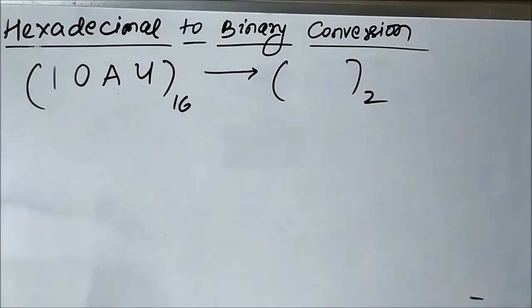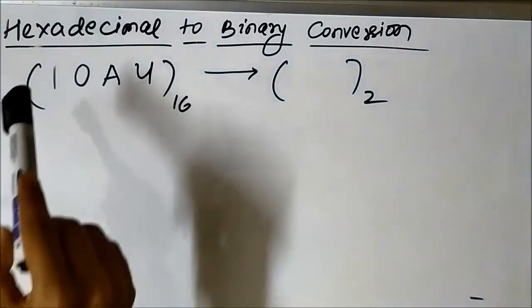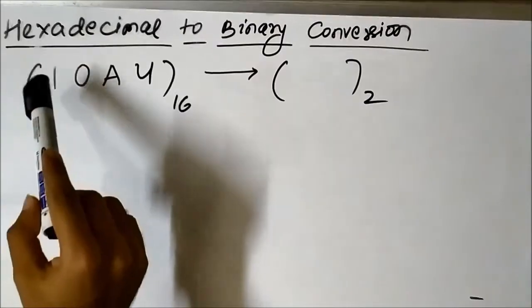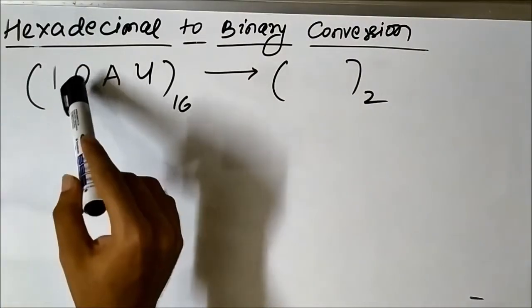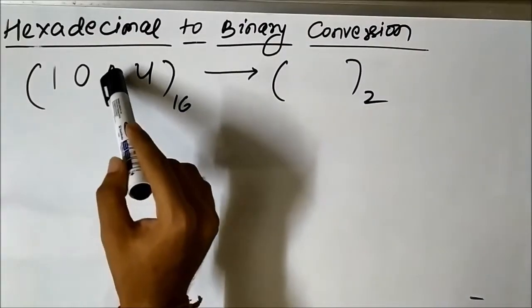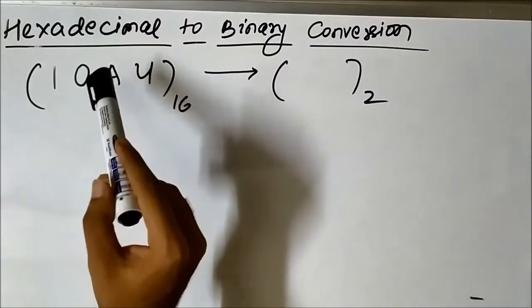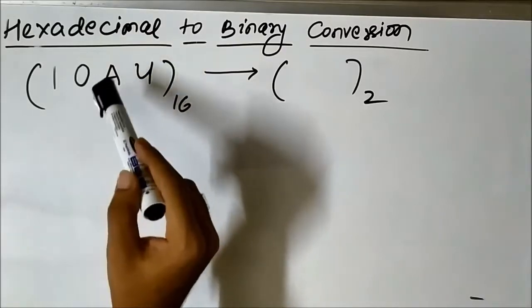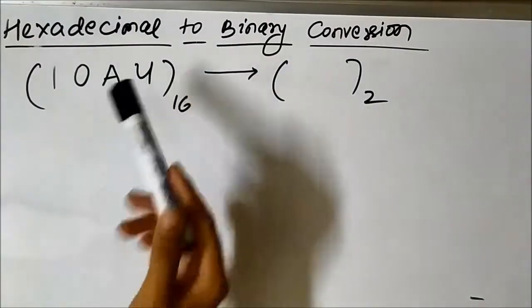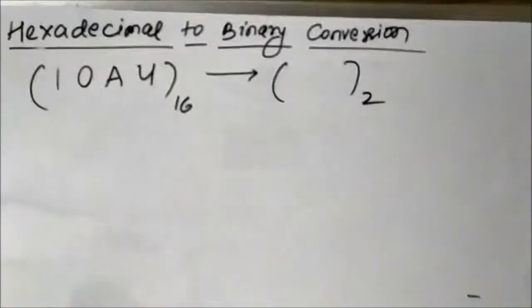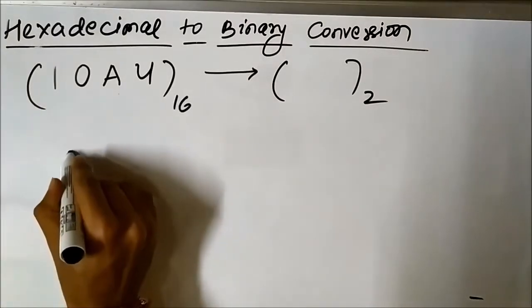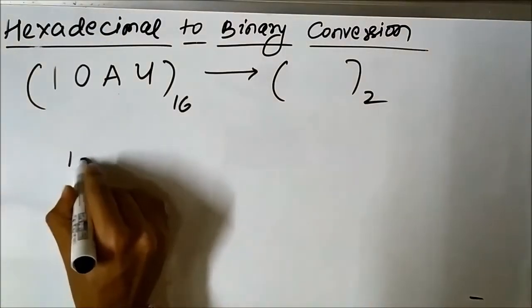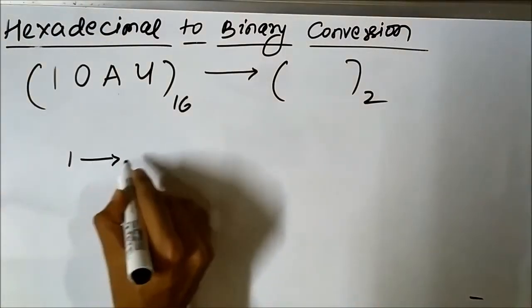For the hexadecimal number 10A4, we have to represent 1 in terms of a 4-bit binary number, 0 in terms of a 4-bit binary number, A (which is 10) in terms of a 4-bit binary number, and 4 in terms of a 4-bit binary number.